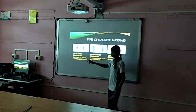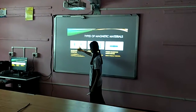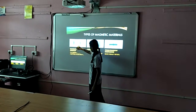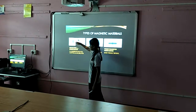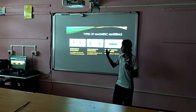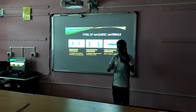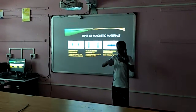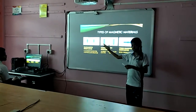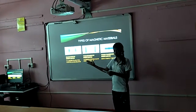It means that the value of mu out here is less than this. That is why the magnetic field lines prefer to move through air rather than through this magnetic substance.